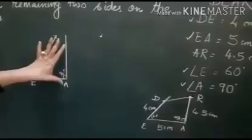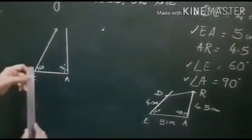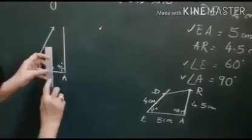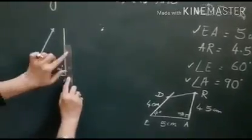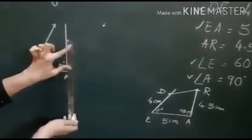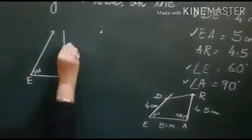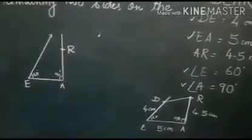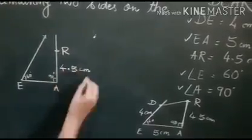Now from here you will take the measure with the help of scale. How much is it? See your rough figure. AR is 4.5, my 4.5 is here. So I put this 4.5 mark here and this is my 0 point. This gives me point R. You can use your compass. Scale is easy to use. And this I have measured 4.5 cm, it is given in the question.